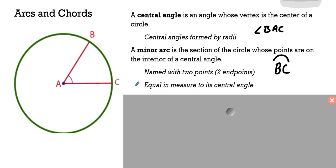And it's equal in measure to its central angle. So let's just, for the sake of ease, say that this central angle BAC is a 60 degree angle. This minor arc BC also is measured in angles, in degrees, and it's a 60 degree minor arc. You can measure in both arc measure and arc length, and this is a 60 degree minor arc.